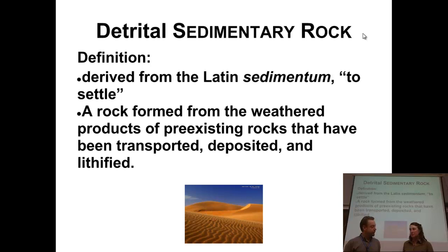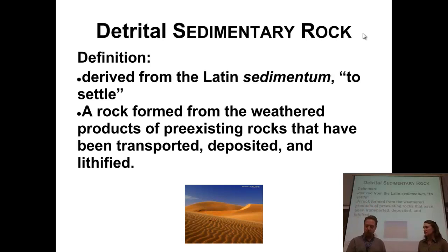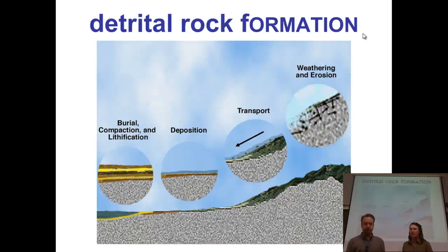We started out talking earlier in the year with minerals. We built those together into igneous rocks, broke them down through chemical and mechanical weathering, and now we're building them back up into sedimentary rocks. We've got four steps to the formation of a sedimentary rock: weathering, then transportation of that weathered material, then the deposition of the sediment, and then they have to be lithified into a solid rock. These are the big four.